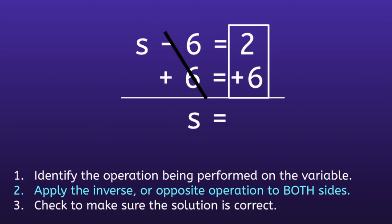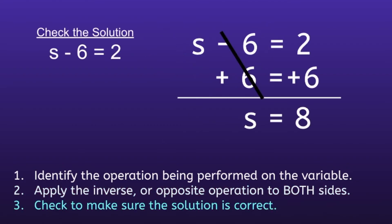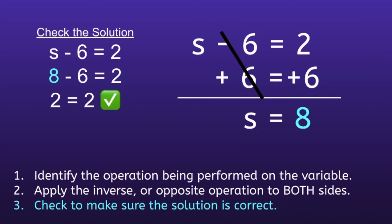This leaves us with S on the left side of the equal sign. On the right side, we have 2 plus 6, and 2 plus 6 is equal to 8. So we have a solution of S equals 8. To check: rewrite the equation, S minus 6 equals 2, then substitute in 8. So 8 minus 6 is equal to 2 — and 8 minus 6 does equal 2. Both sides equal 2, so our solution is correct: S equals 8.